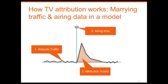This is the basic concept of how TV attribution works. We start off by taking the website traffic, then we add the airing times to that. When you marry the traffic data with the airing time and plot it on a graph, you can immediately see that orange shaded area. The attribution model automatically takes care of that and calculates the uplift using algorithms.